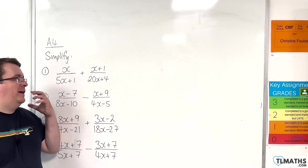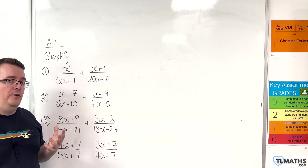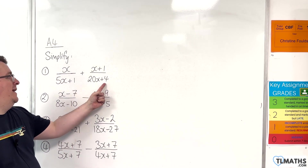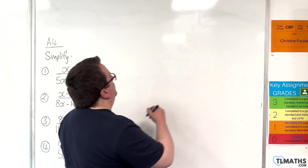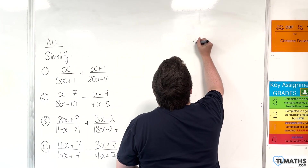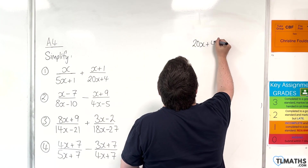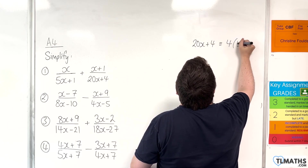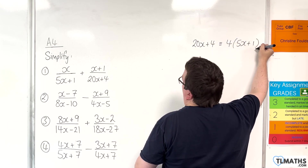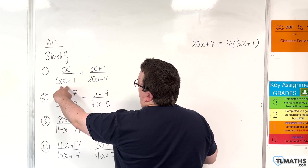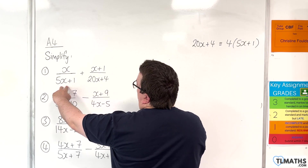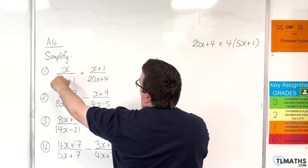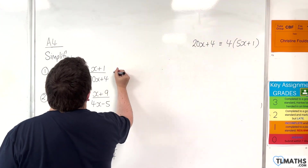Always be on the lookout to see whether you can factorise one of those denominators. We've got 2x plus 4 — we can factor out 4 and then have 5x plus 1. And we've got the 5x plus 1 there in the other denominator. So if I multiply the first fraction top and bottom by 4, I will get the same denominator.